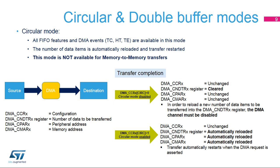DMA controllers support circular mode, allowing configuration of the number of data items to transfer once and automatically restarting the transfer after a transfer complete event. This is convenient to support continuous transfers, such as ADC scan mode. When circular mode is active, the internal registers containing current source and destination addresses — which are not visible by the software — are automatically reloaded upon transfer completion from DMA_CPAR and DMA_CMAR registers.